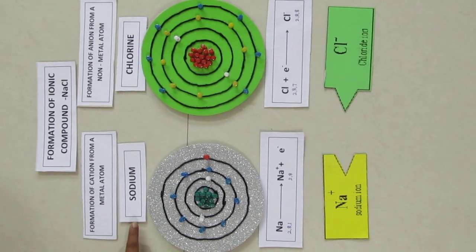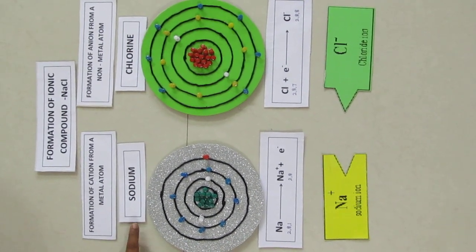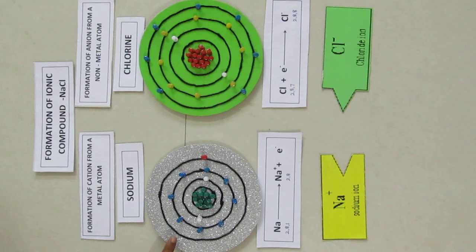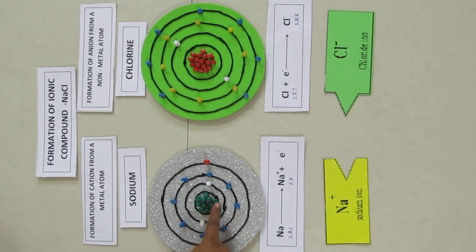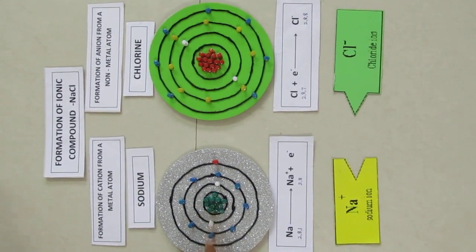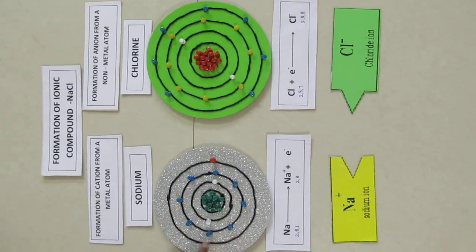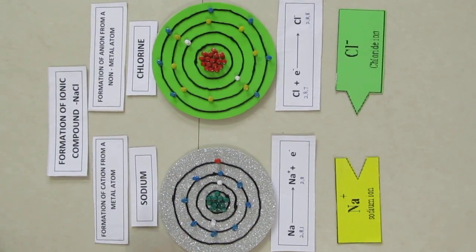We all know atomic number of sodium is 11. Sodium has 11 positively charged protons inside the nucleus and 11 negatively charged electrons outside the nucleus.